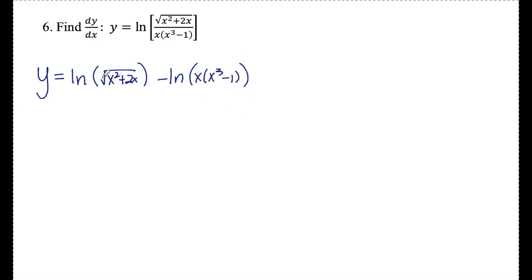The radical becomes an exponent of 1/2, which I can bring out front: (1/2)ln(x² + 2x). Then I split the multiplication into addition: - [ln(x) + ln(x³ - 1)]. Now I have all basic ln(u) rules.